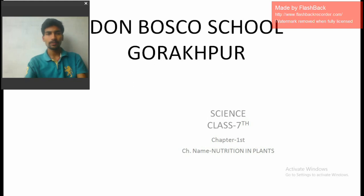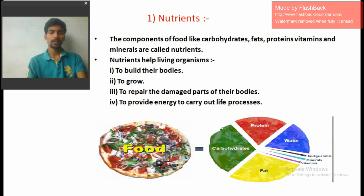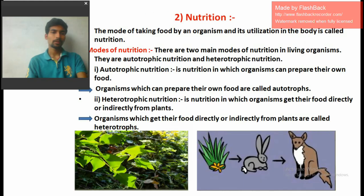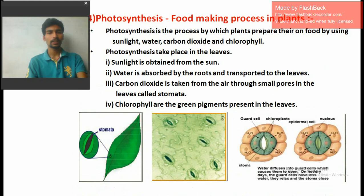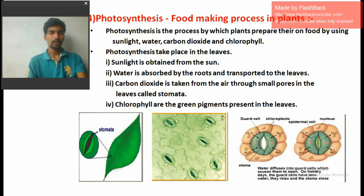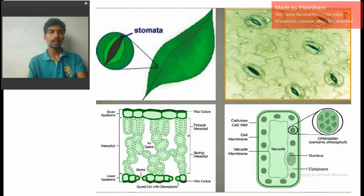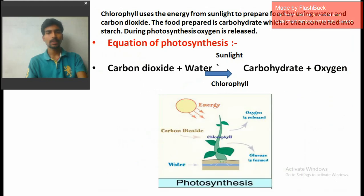Let's start our first chapter of Class 7th: Nutrition in Plants. In the last lecture we studied what nutrients are, what they are made up of — carbohydrates, fats, vitamins, proteins and minerals. We also discussed modes of nutrition, what photosynthesis is, how it works, and from this pictorial graph we can easily understand the process of photosynthesis and its equation.